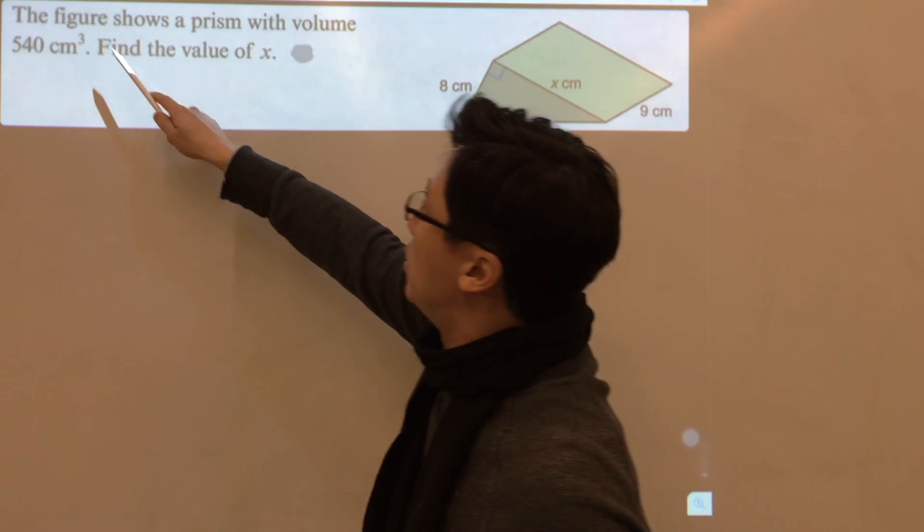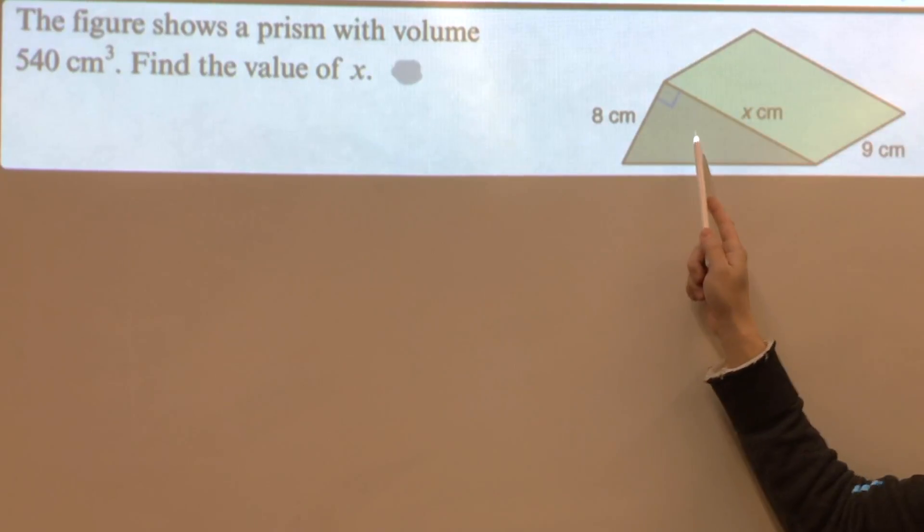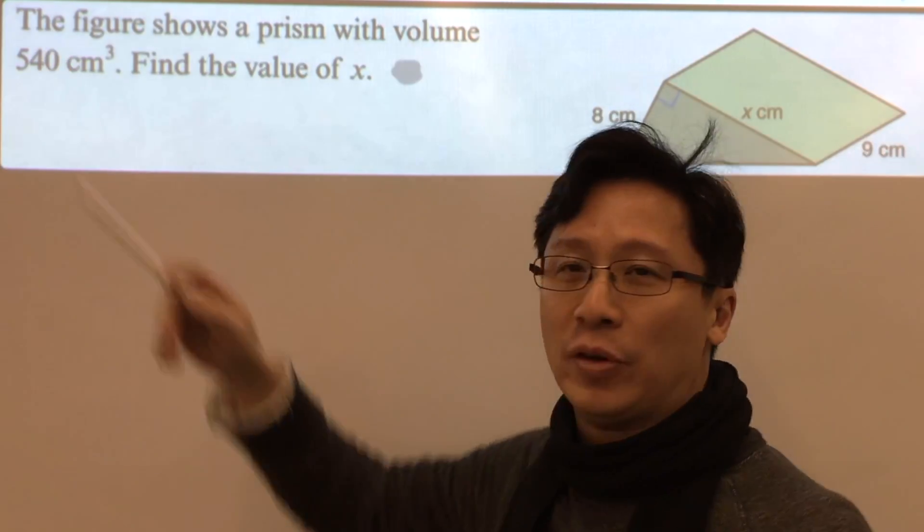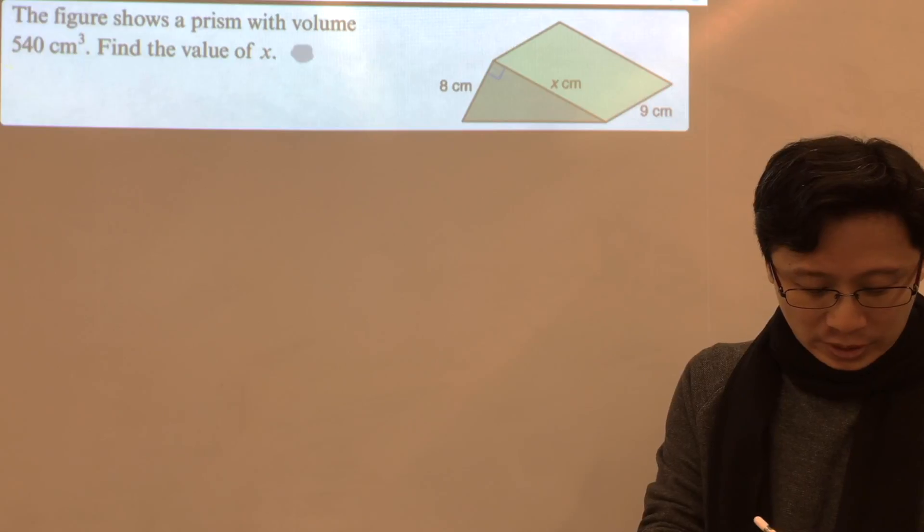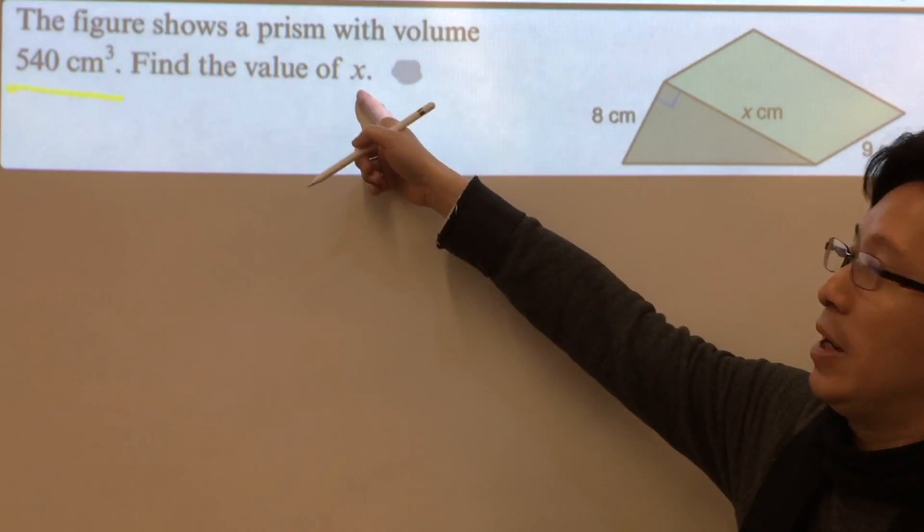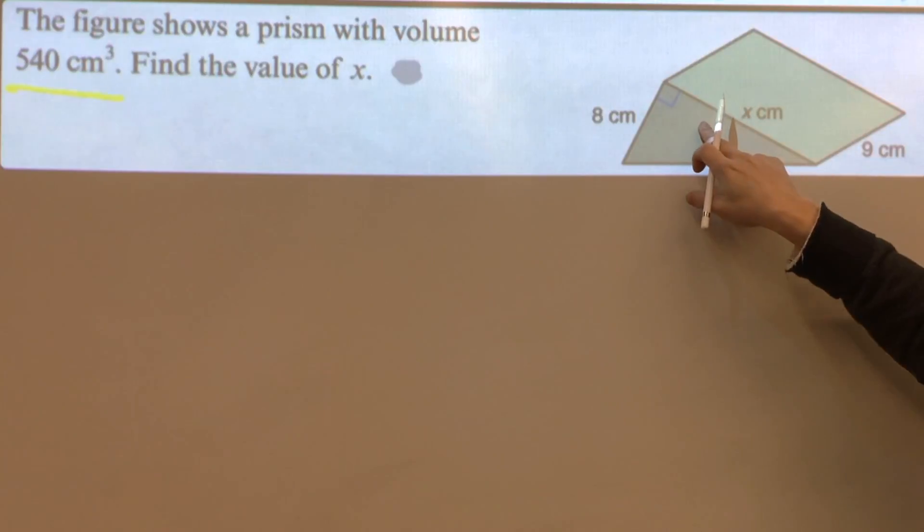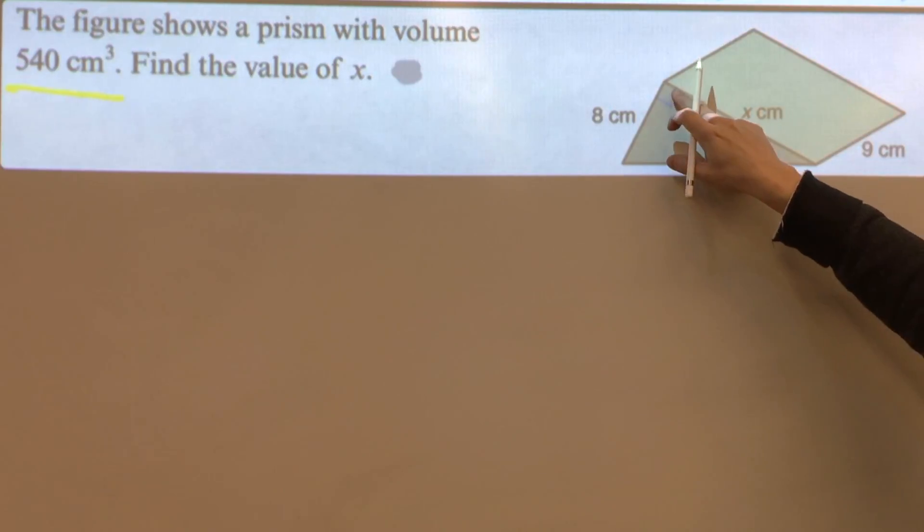Now let's look at another example. The figure shows a prism with volume 540 cm³. This is the volume. Find the value of x. This is x. We can see that the prism is in the form of a